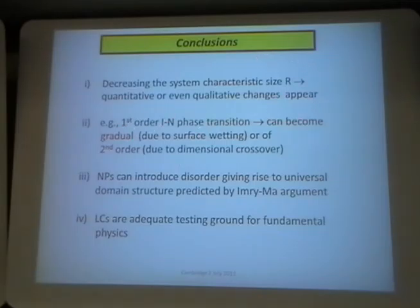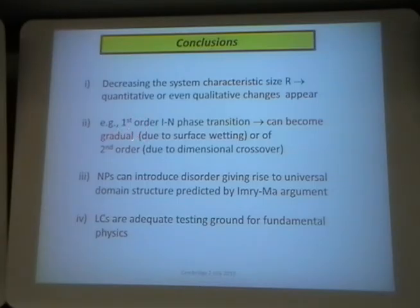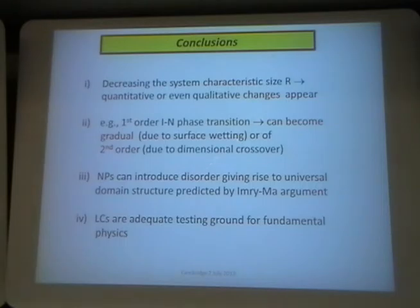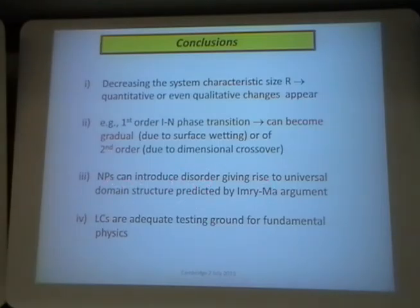We see that if surface wetting is important — if surface interactions are important — then the transition is killed because of the non-critical behavior of the surface. However, if the surface is not so strong, it can also change the character, because you have a dimensional crossover — three-dimensional and two-dimensional systems behave differently. And we have seen that if you introduce nanoparticles, there are a lot of different effects. I have shown only one case, when they enforce disorder.